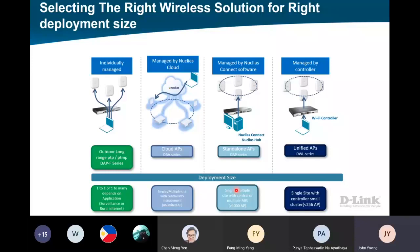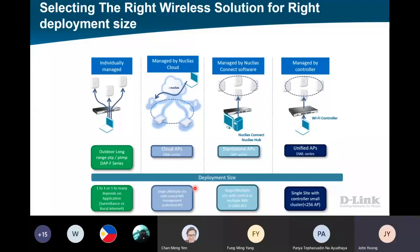The AP series is called DAP. Next, over here we have the Nucleus Cloud - it's our DBA series. For this cloud, the cloud wireless controller will be able to manage unlimited APs. But of course, you will need to get the license per year, three years, or five years. And today's topic will be the P2P - it's our DAPF series, able to support for the software itself up to 100K, but it really depends on the software specs - is it i7 or those server specs.